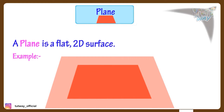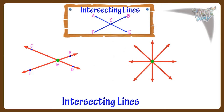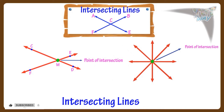Now let's see what are intersecting lines. Two or more lines that meet at a point are called intersecting lines, and the point at which the lines meet is called the point of intersection. For example, the two lines CD and EF are intersecting at point M.